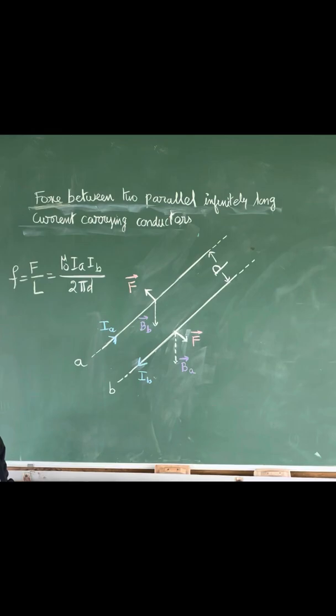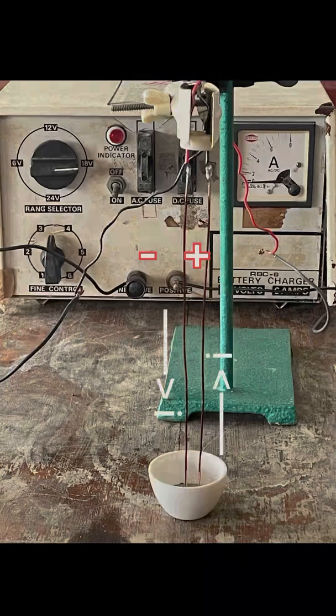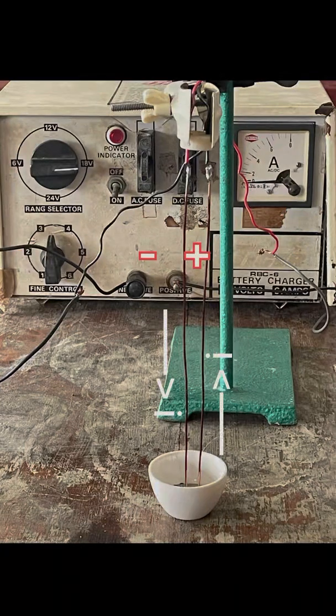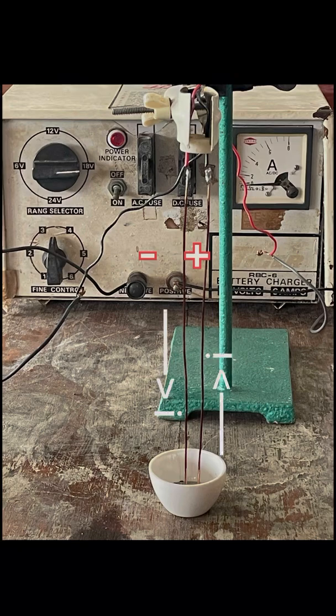Let us see it in the demo. In this setup, we have a battery charger of 24 volts and 6 amperes range. Two copper wires of 25 centimeter length are hung.